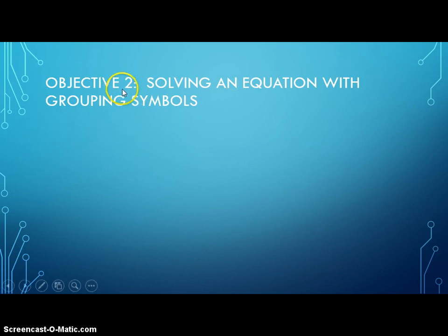So objective two, solving an equation with grouping symbols. Now this isn't much different than what we just saw. The only added thing we're going to have to do to this problem is we're going to distribute to remove the parentheses before we do anything else. And you'll see that once we distribute, it's going to look just like example 1. So let's take a look.